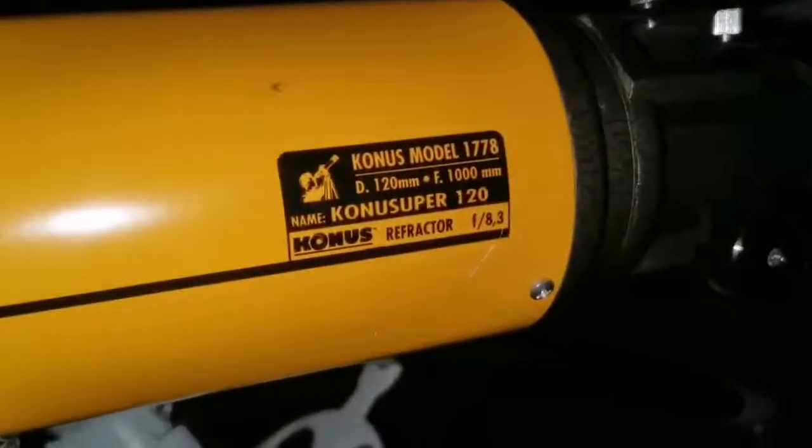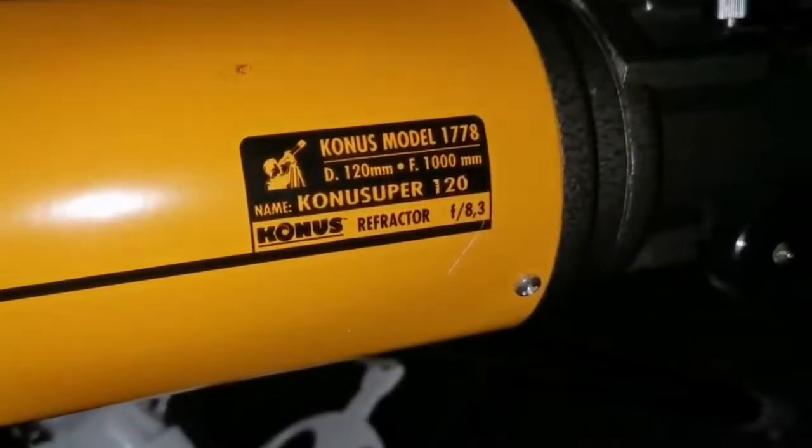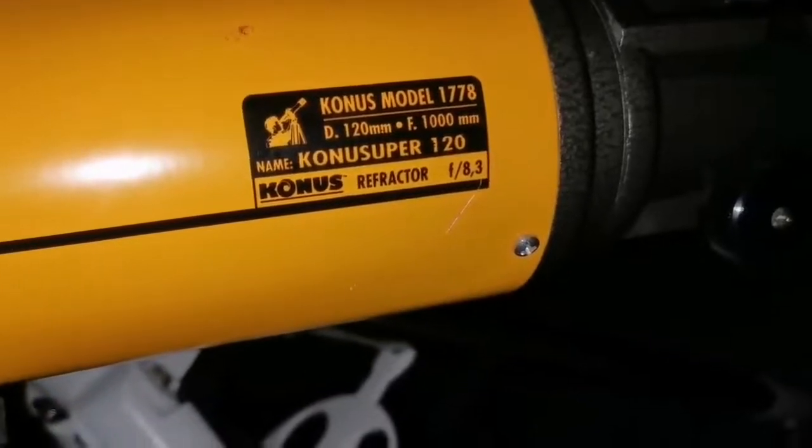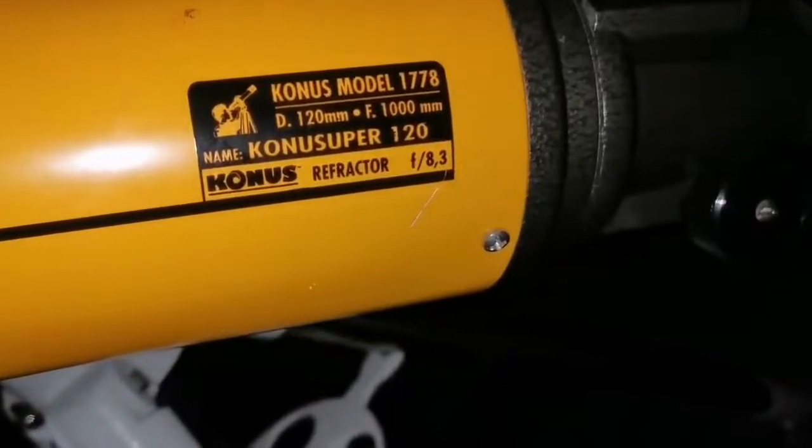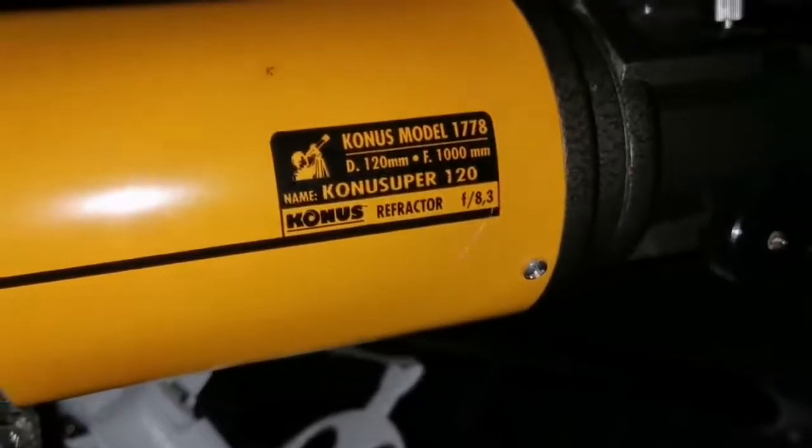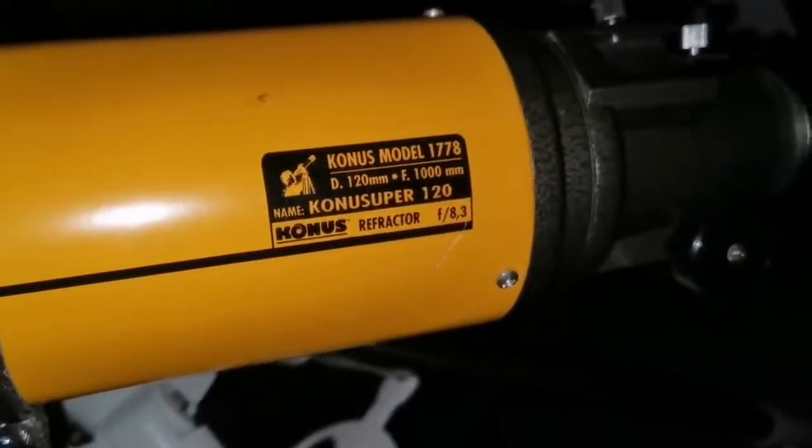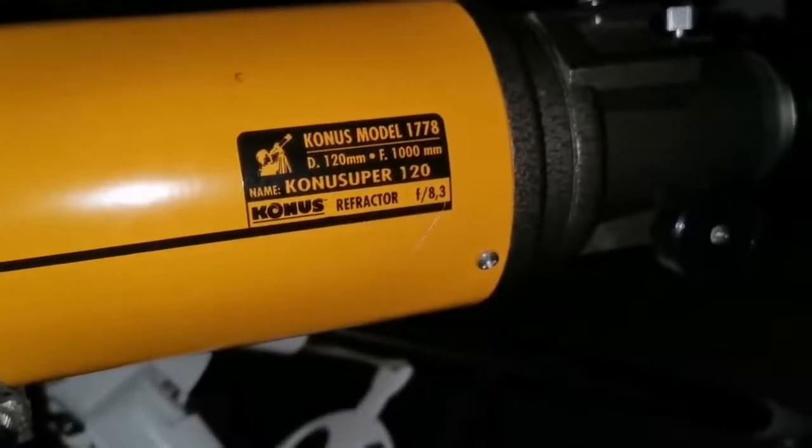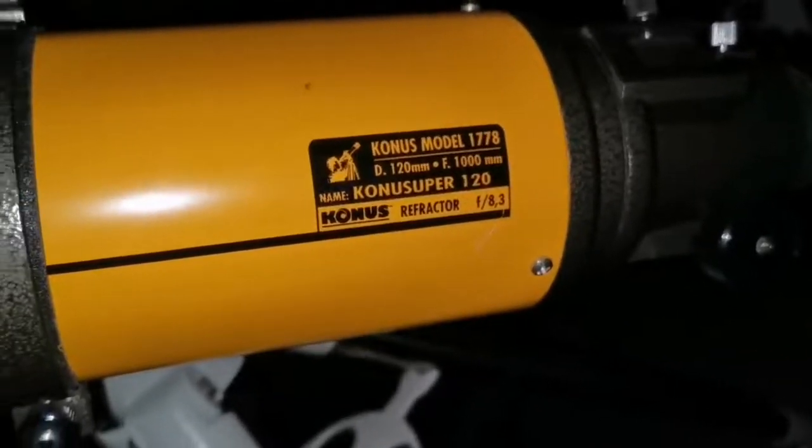So as you can see here, 120 millimeter f/1000, so the focal ratio is 8.3. It's a Konus model 1778. That's an Italian version of this.